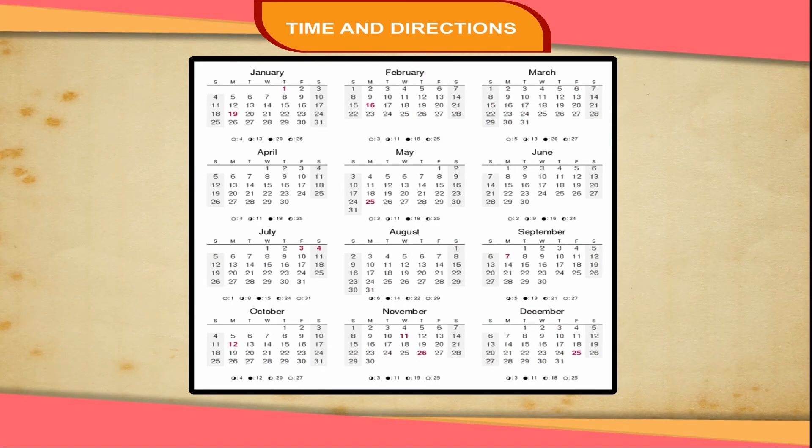There are 12 months in a year. These are January, February, March, April, May, June, July, August, September, October, November and December.